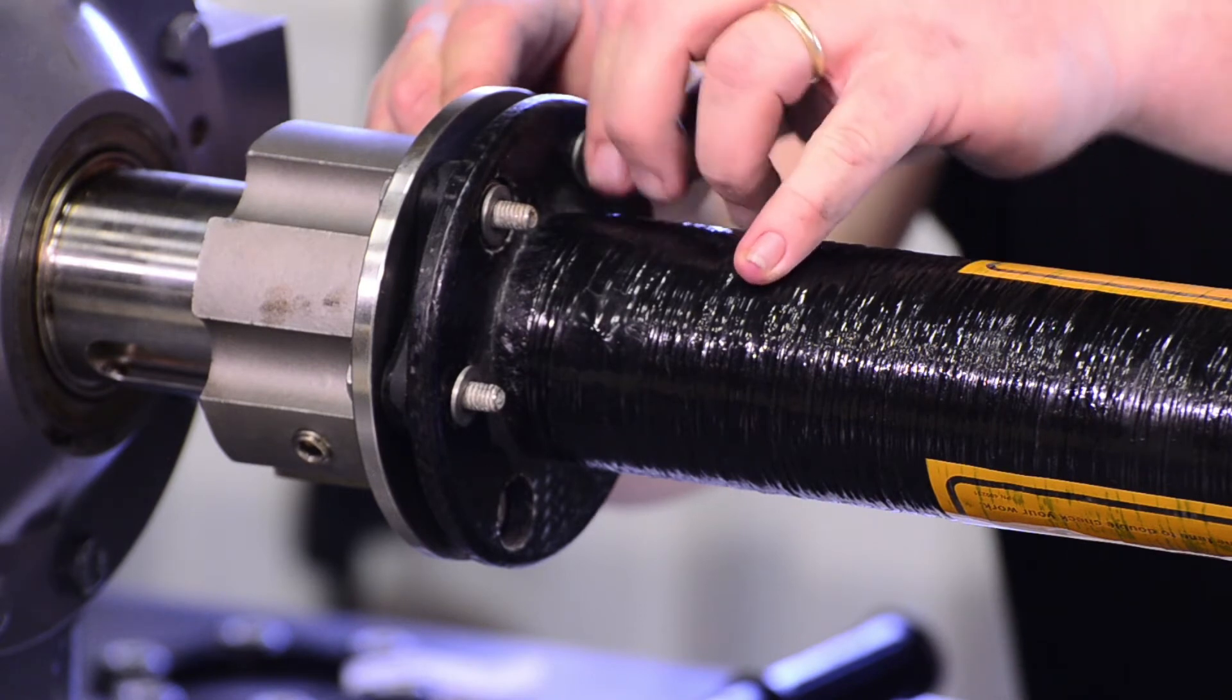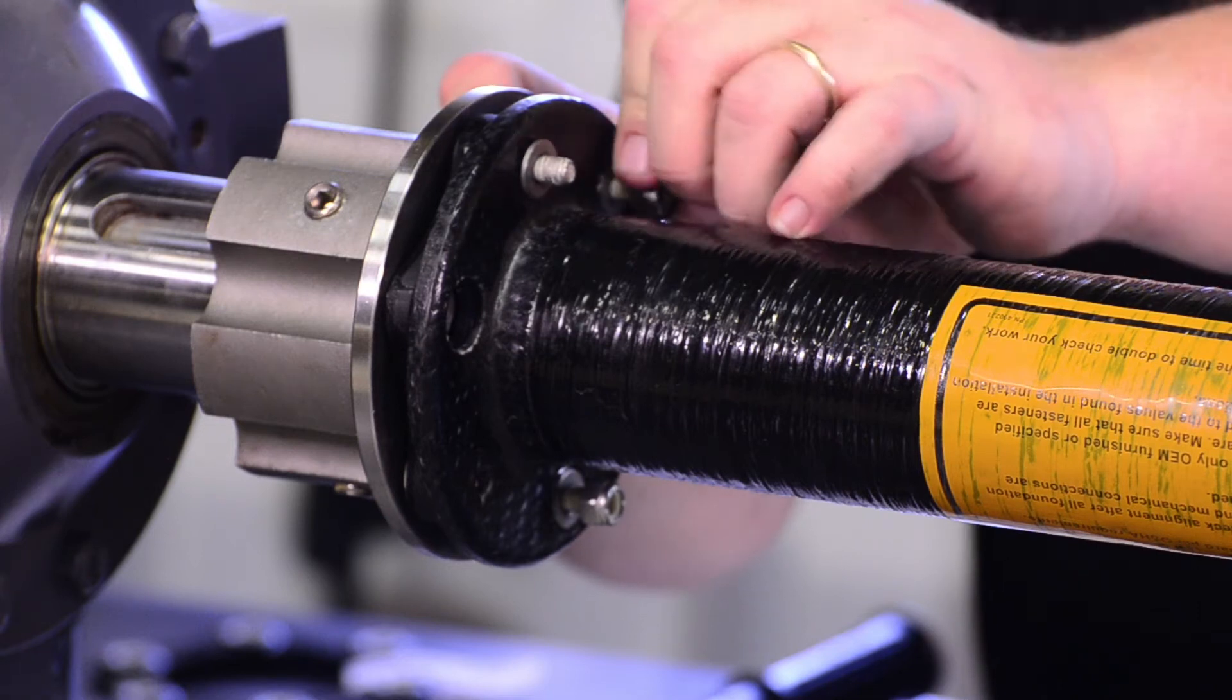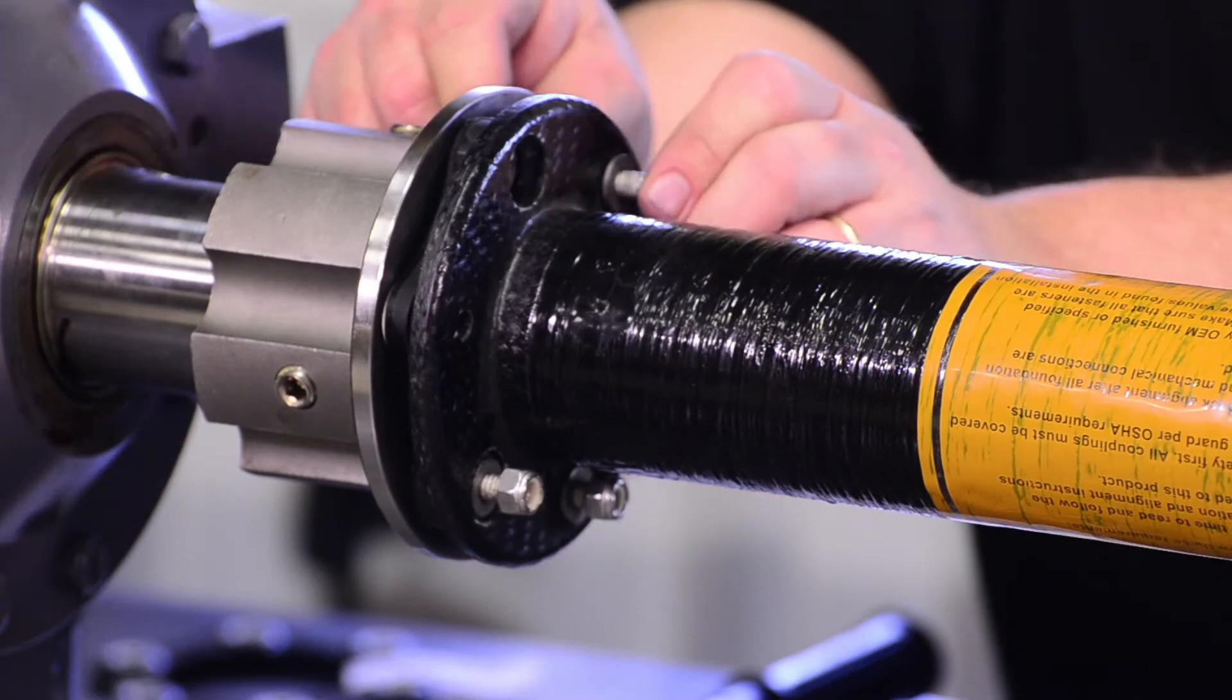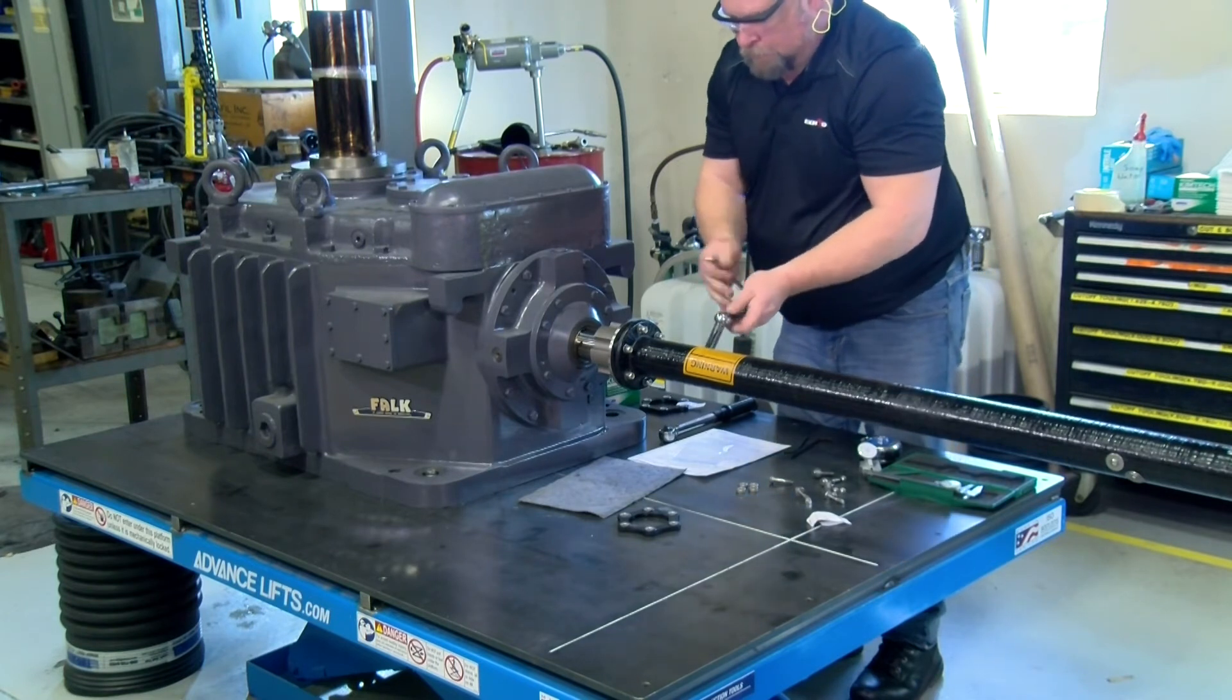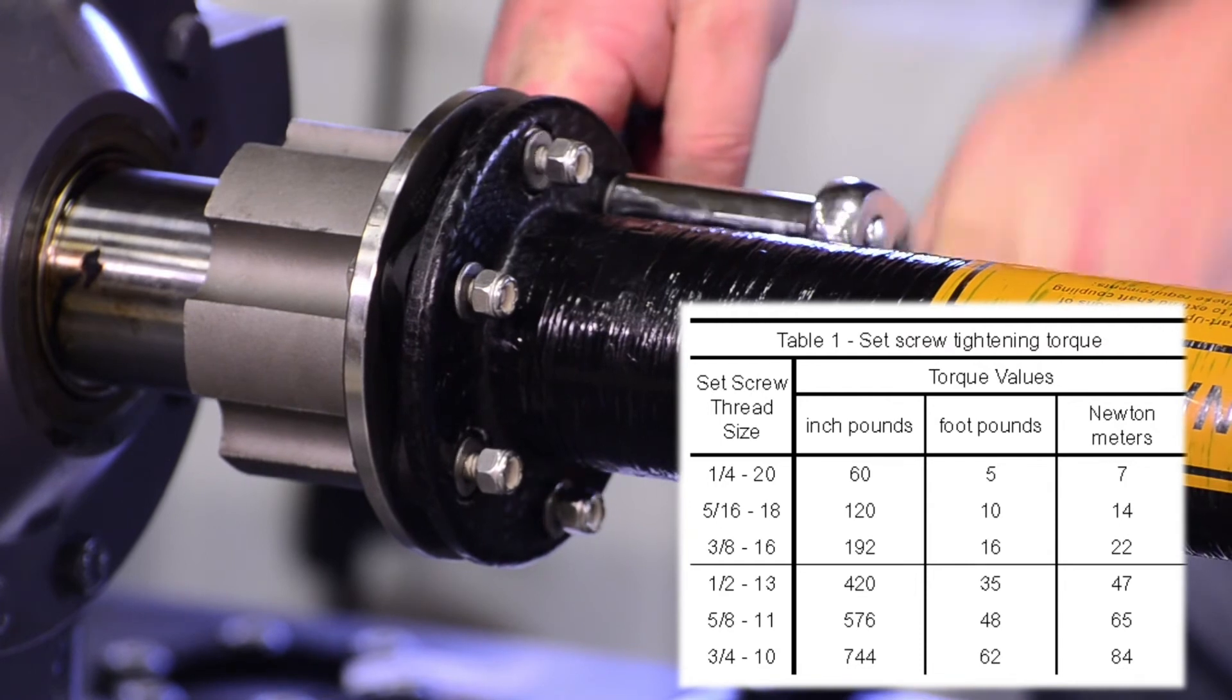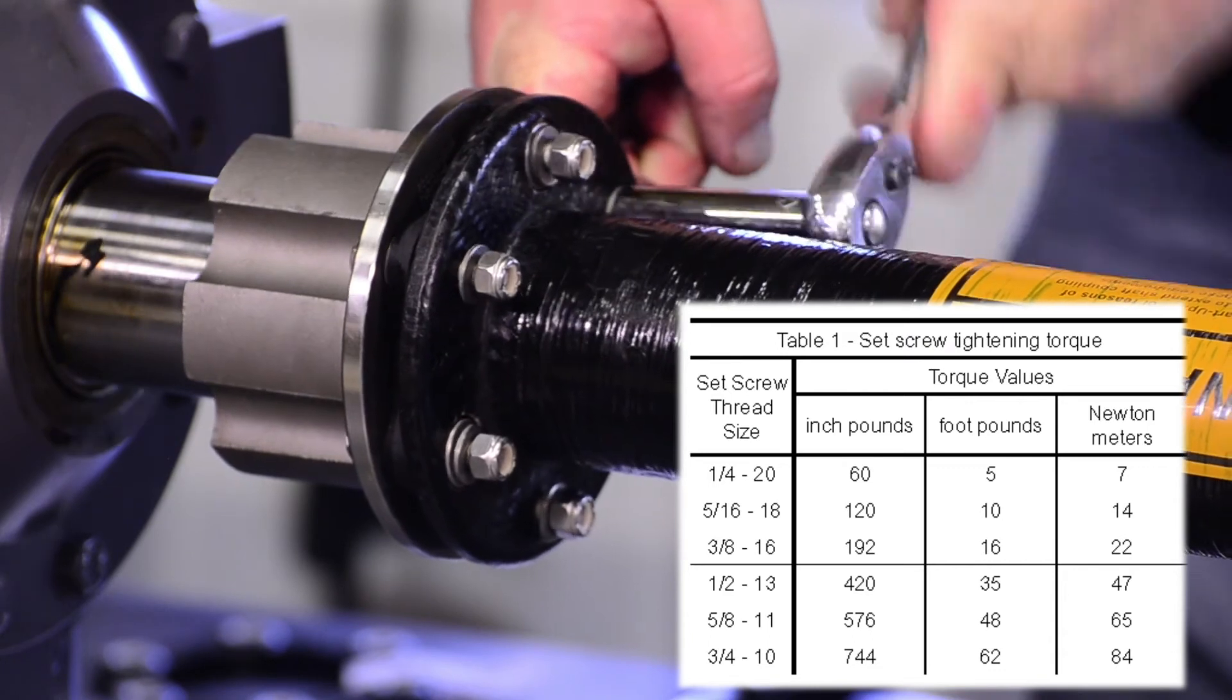The lock nuts will be tightened to the proper torque value after all the hardware is loosely assembled. Repeat this process for all available bolt holes on the hub and spacer. Once all hardware is loosely assembled, tighten the lock nuts to the torque values corresponding to the coupling model. These values are used for every lock nut on the coupling. Repeat this process on the other end of the coupling.